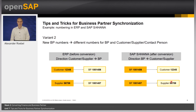In this variant, we decided not to merge the same customer and vendor to one business partner, but here we have assigned a completely independent numbering of all objects. Every object has its own internal number range. No additional setup would be required after S4HANA conversion.